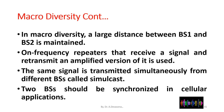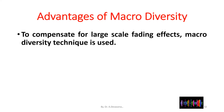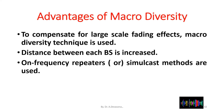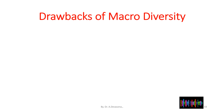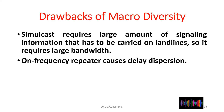The two base stations should be synchronized in cellular applications. Advantages of macrodiversity: it compensates for large-scale fading effects, distance between each base station is increased, and on-frequency repeaters or simulcast methods are used. Drawbacks of macrodiversity: simulcast requires a large amount of signaling information that has to be carried on landlines, requiring large bandwidth, and on-frequency repeaters cause delay dispersion.